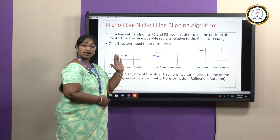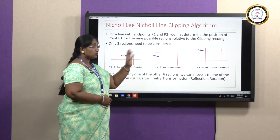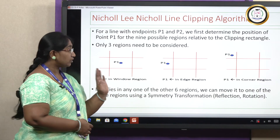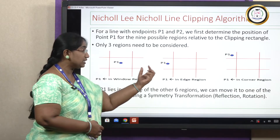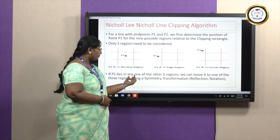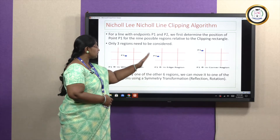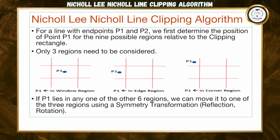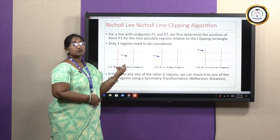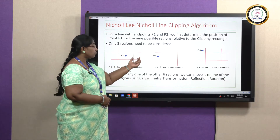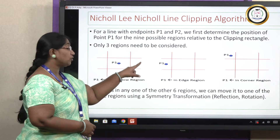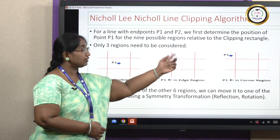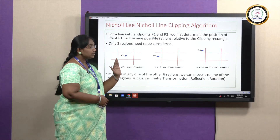I cannot always assure that P1 will be in only these positions — it may be anywhere. If P1 is in any region other than these three considered regions, we apply a symmetry transformation and switch P1 to only these three particular regions. In symmetric transformation, using reflection and rotation, we can switch the point to any of these three locations.